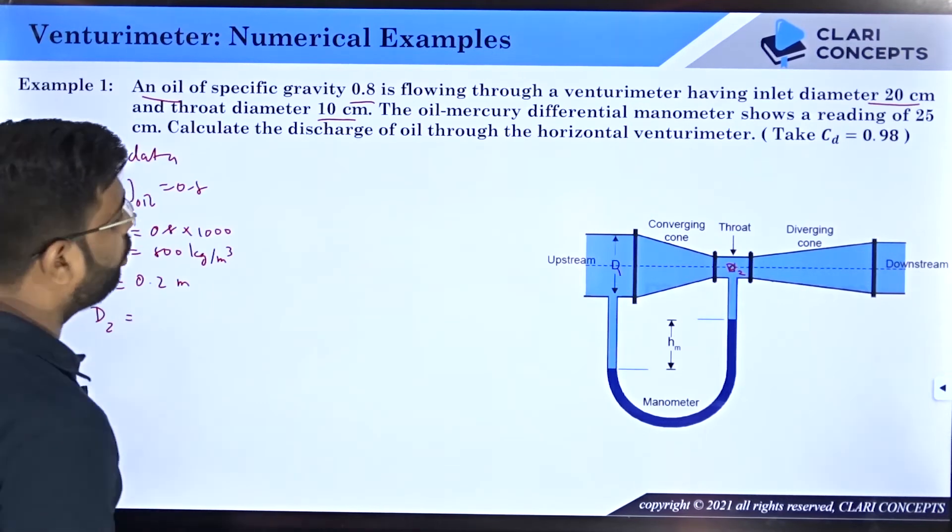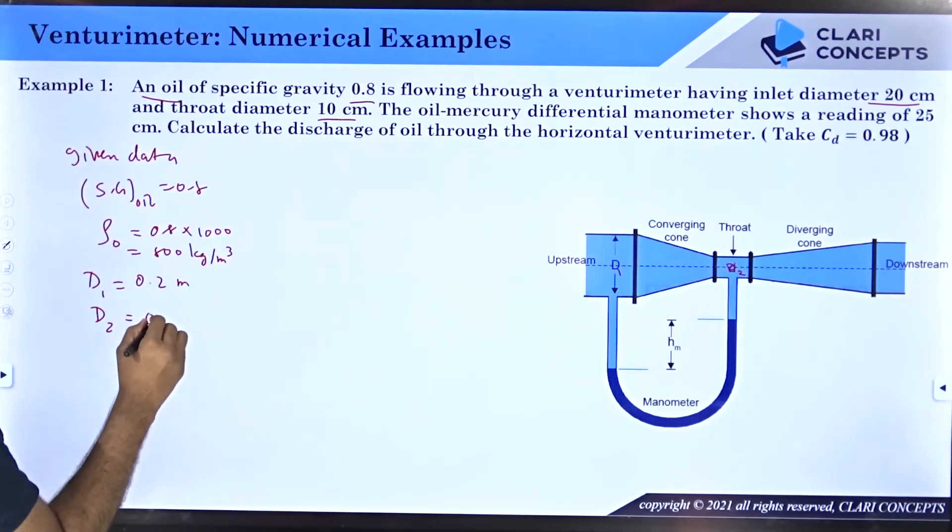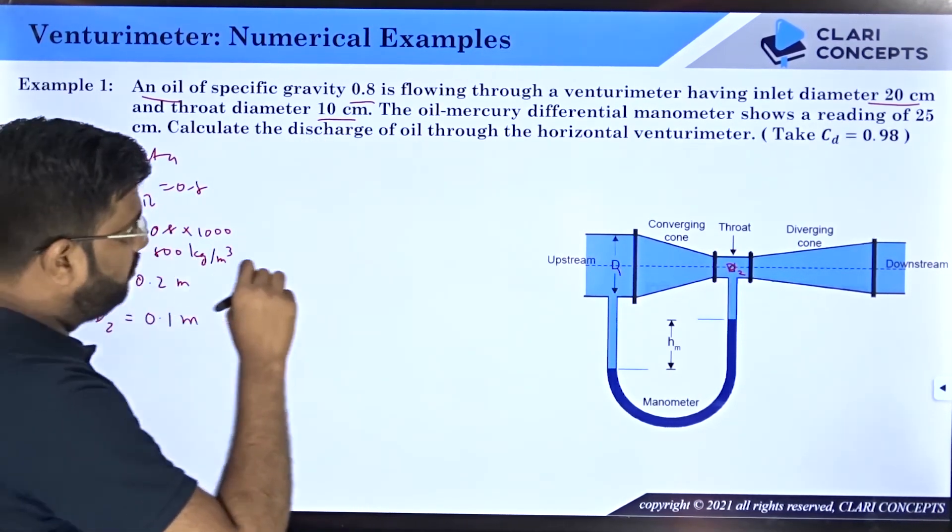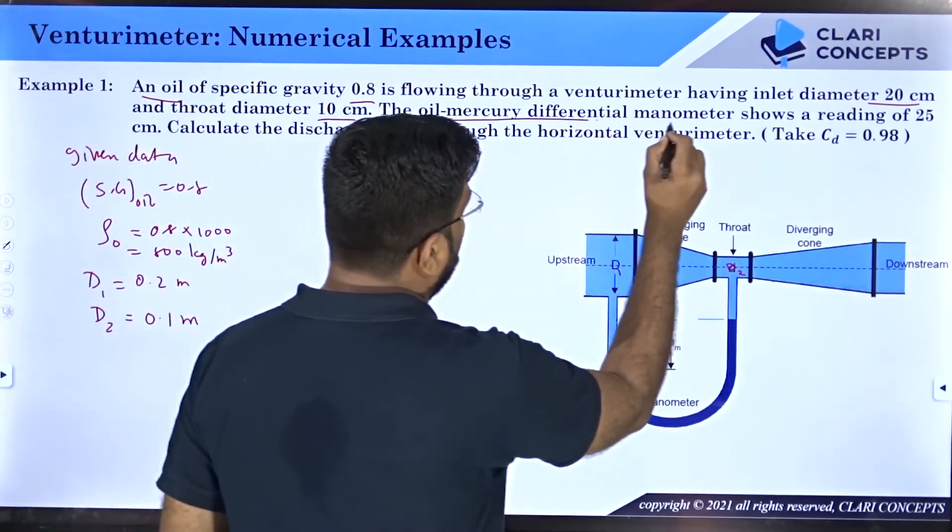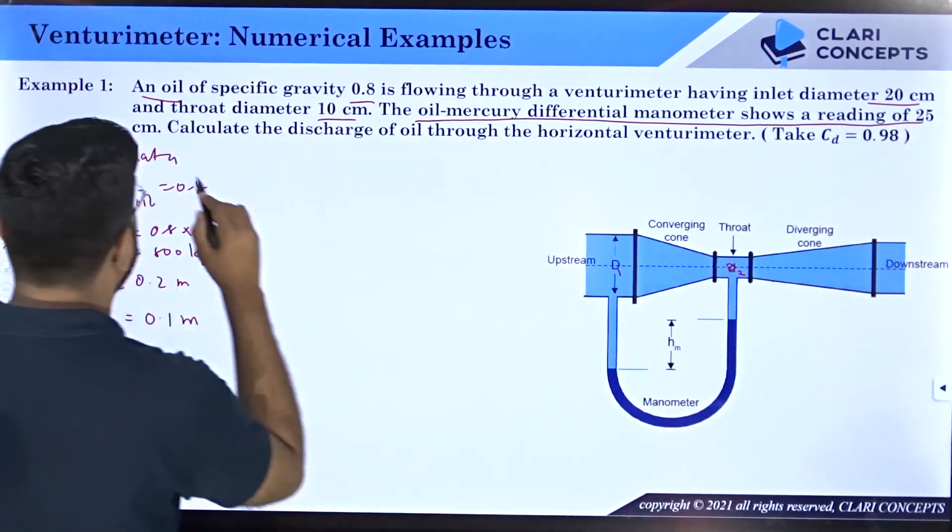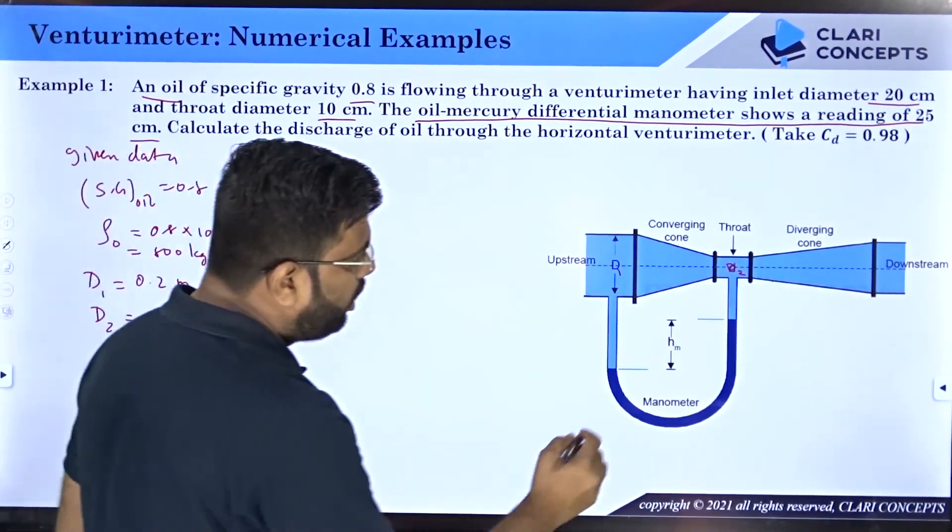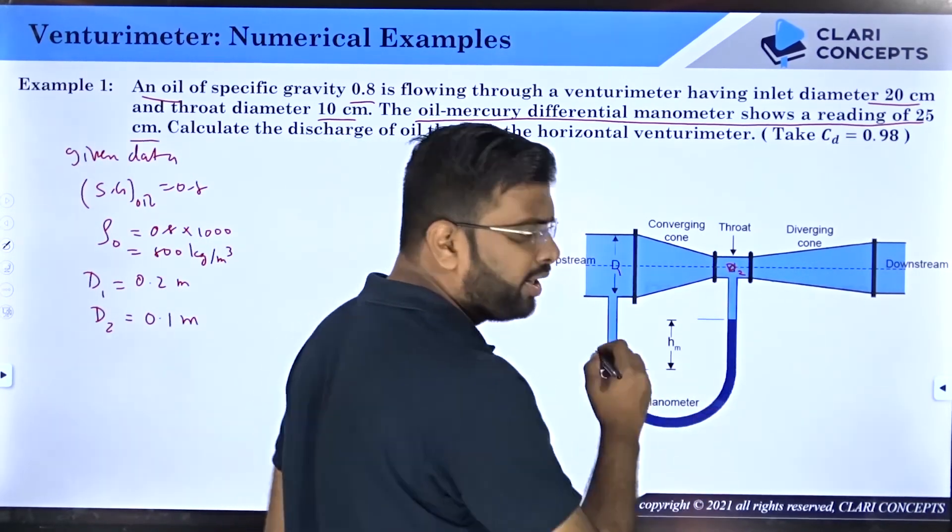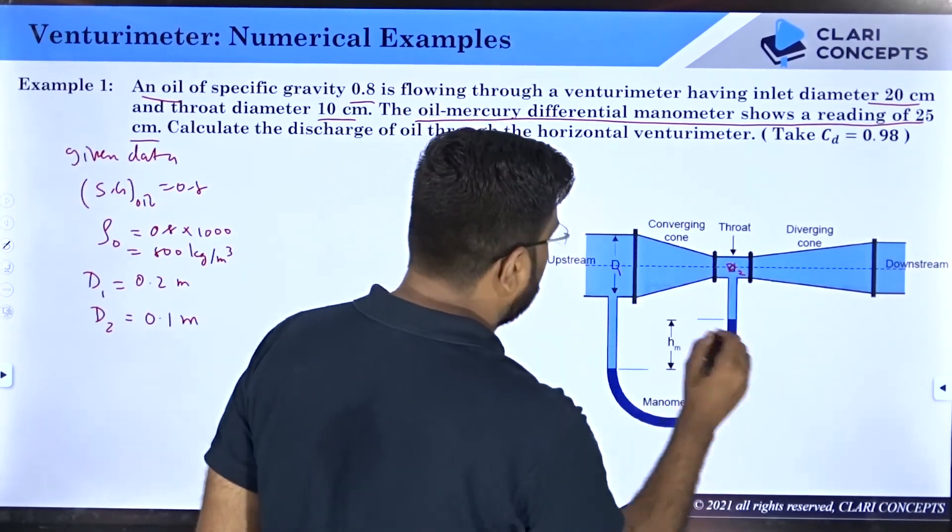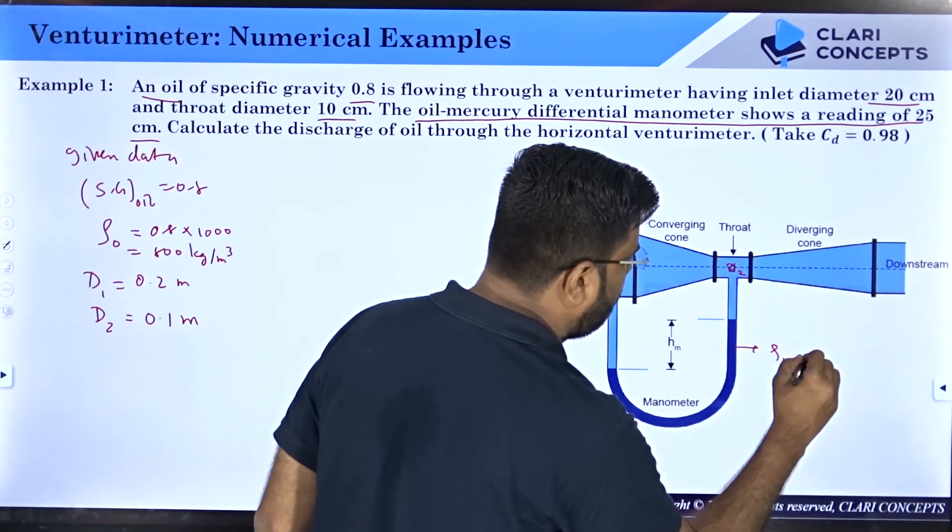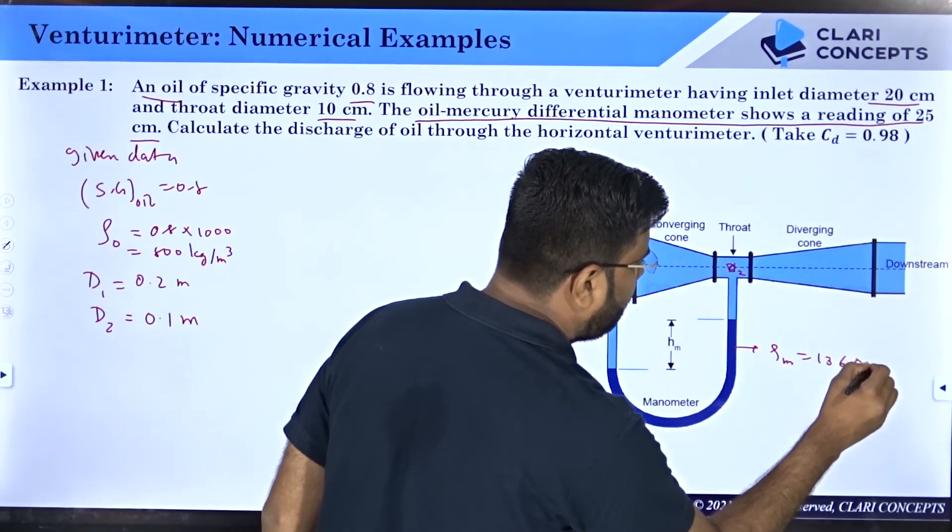The oil mercury differential manometer shows a reading of 25 centimeters. That means they have mercury as the manometric fluid, and the density of mercury will be 13,600 kg per meter cube.